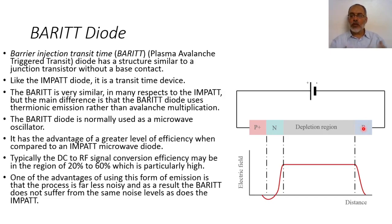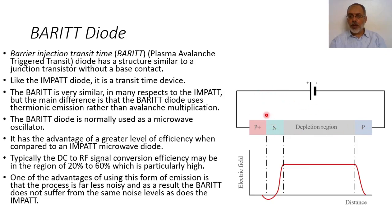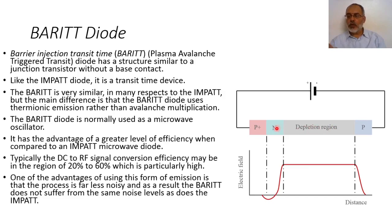From the point of view of forward and reverse biasing, according to this connection, we can see that this junction is forward biased because P is connected to the positive and N is connected to the negative side. On the other hand, this NP junction is in inverse or reverse biased. The forward biased diode will introduce some carriers here, and these carriers will not move through the depletion region until the potential of the electric field is greater than a specific value, such that they will be moving towards the NP junction without introducing breakdown in the depletion region, because the depletion region does not include any carriers.